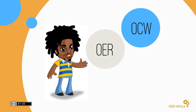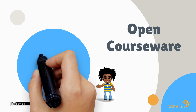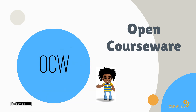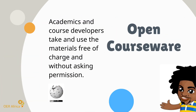There are different types of open content: open courseware, open educational resources, and massive open online courses, for example. It's important to know the implications of using each. Open courseware includes some, and in many cases all, of the components that make up a course — lecture notes, course readings, assignment tasks, examination papers, even marking schemes. Members, academics, and course developers are encouraged to take and use the materials free of charge and without asking for permission.